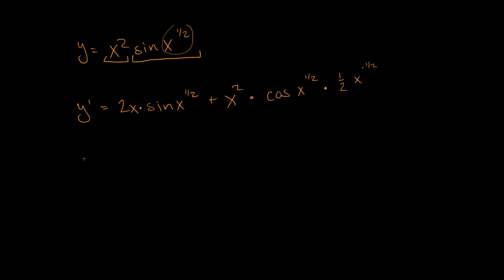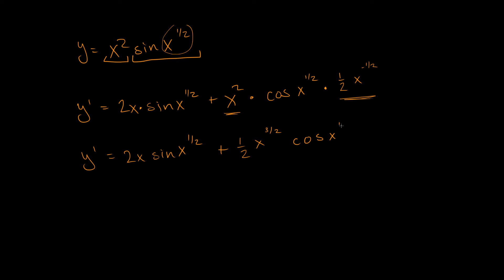Now let's clean things up. We get y' equals 2x sine of x to the one-half, plus... here we have x squared and one-half x to the negative one-half. When we have the same base and we're multiplying, we add the powers. So we get one-half x to the two plus negative one-half, which is the three-halves power, times cosine of x to the one-half.